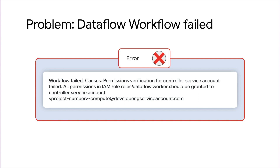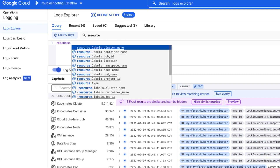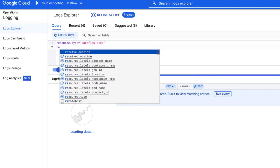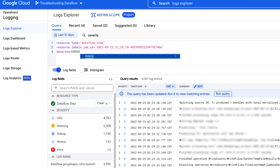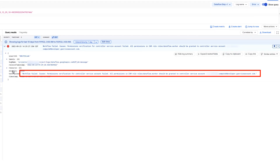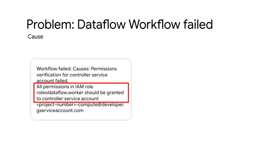Here's one more scenario where a Dataflow workflow fails with an error during the verification of permissions for the controller service account. To troubleshoot this issue, go to the Logs Explorer page. Use this filter by replacing the Dataflow job ID with your failing job ID and search for any errors or warnings. You can see the same error here. Examining the error closely indicates it occurs due to lack of permissions for roles/dataflow.worker in the controller service account or the Compute Engine service account used for executing the Dataflow job.